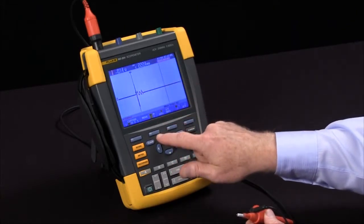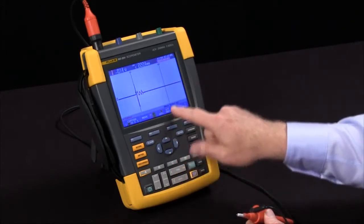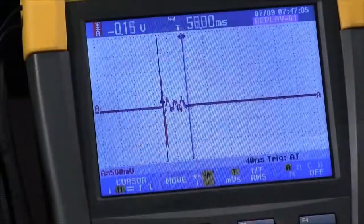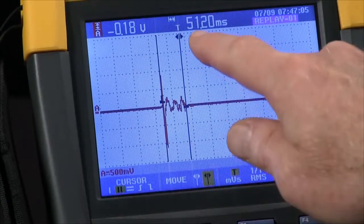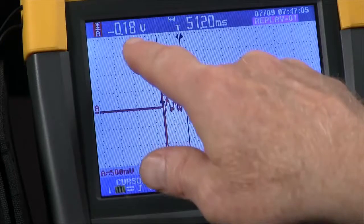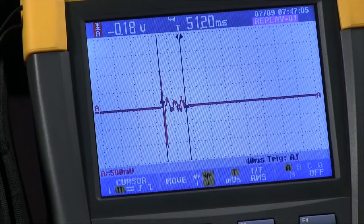I'll switch to the second cursor by pressing the F2 key. Now I've got control of this one. I'll bring it to the end of the event and I can see the delta time 51 milliseconds between those two points and the difference in voltage as well.